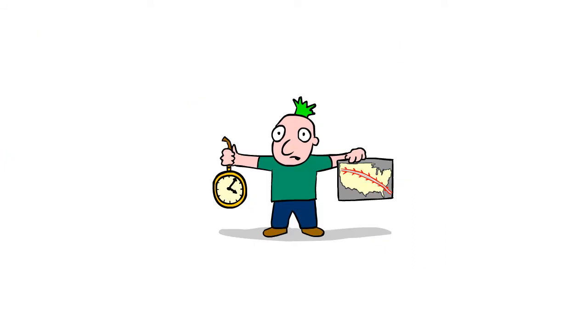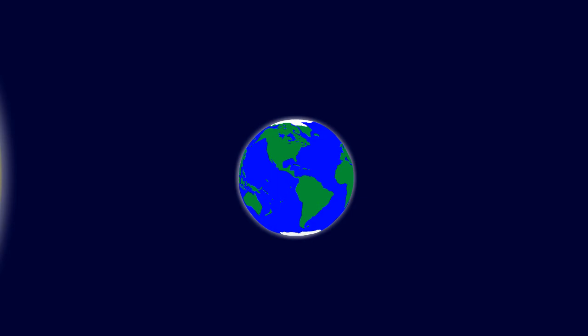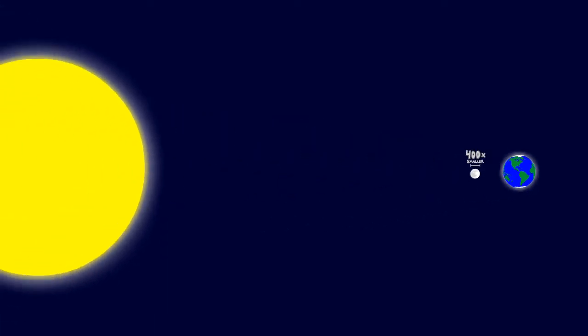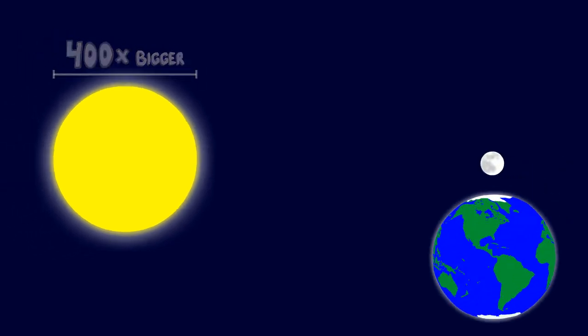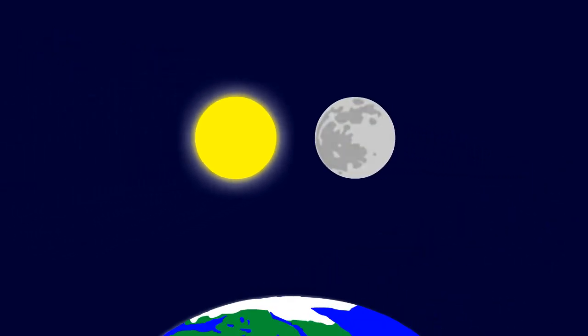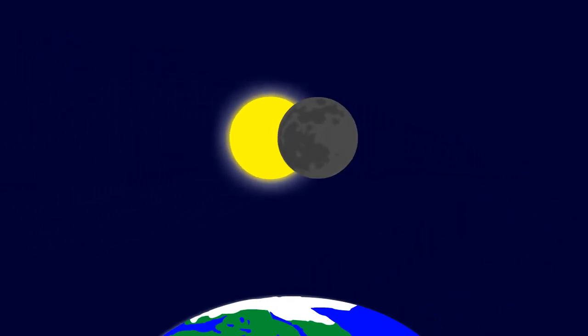But knowing when and where is just the start of the knowledge we've gained. You see, we are particularly lucky here on Earth because the Moon's diameter is 400 times smaller than the Sun's. But it's also 400 times closer to the Earth, making them appear almost the same size in the sky.